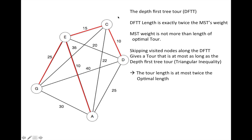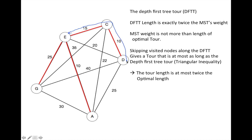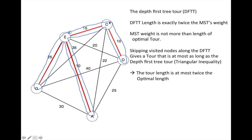Now that we have a minimal spanning tree, we want to find a tour. First we're going to find a tour that is not quite legitimate — it basically goes along the edges of the minimal spanning tree. From E to C to D, and now it's a leaf so we go back to C, then to E, then to A, back to E, then to G, and back to E. You can see that we go along each edge twice. So the length of this depth-first tree tour is exactly twice the minimal spanning tree weight.